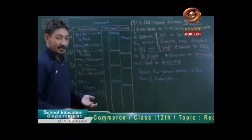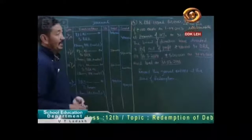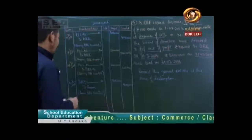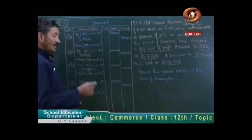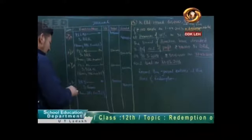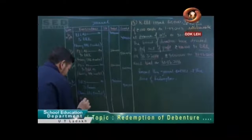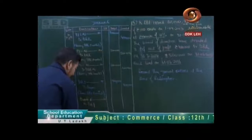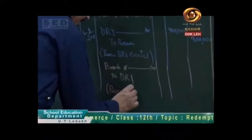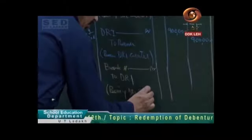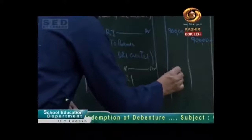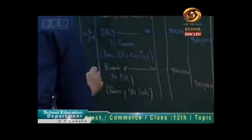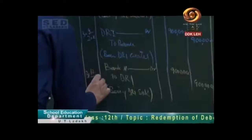Now after that there is no transaction. We will go straight to 31 December 2016, which is when we will redeem the debenture. So we will return to this DRI — what we will do is convert it. So this entry will be released: Bank account debited to Debenture Redemption Investment account. The narration will be: being DRI sold. That is 9 lakh. Now 9 lakh cash the company will receive.